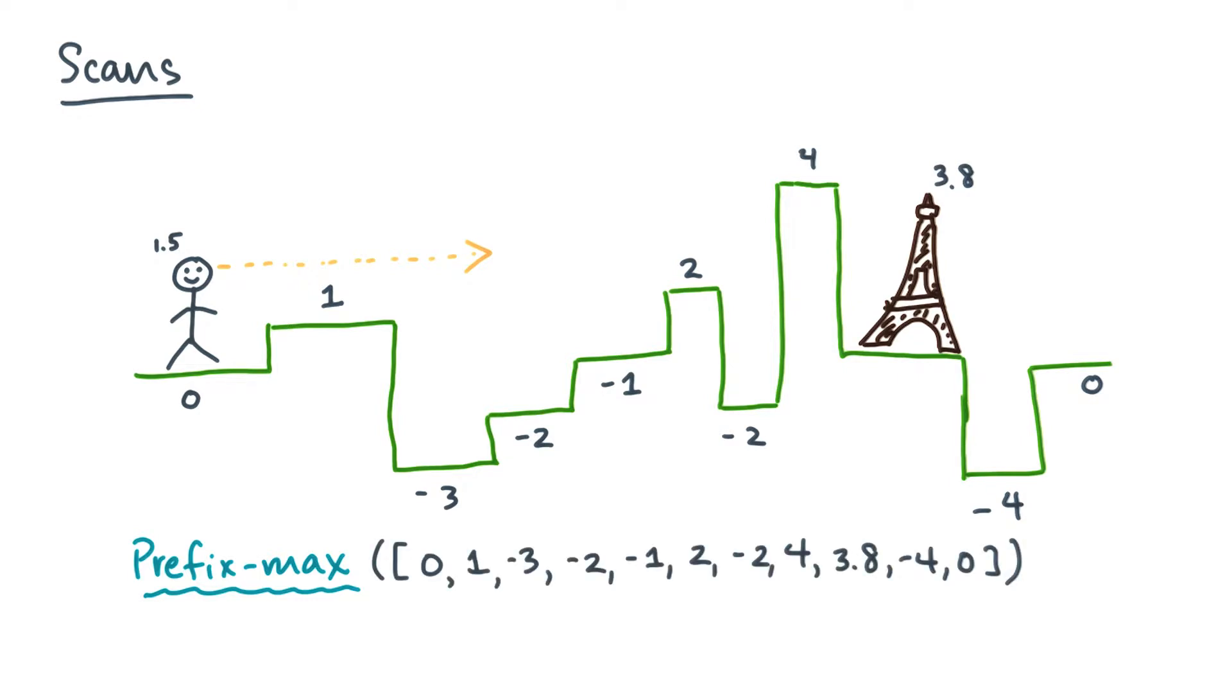The input array to a prefix max would be the list of elevations. A prefix max computation would ask, for each point in the terrain, what is the largest elevation I've seen so far? Your friend could see as long as the elevations in the terrain were no higher than his or her position.